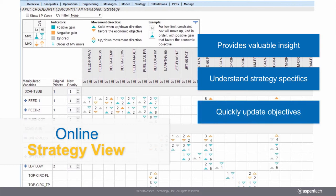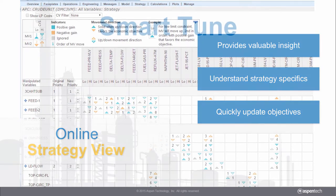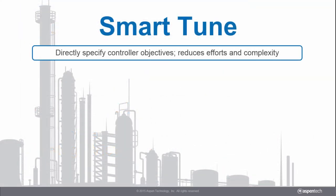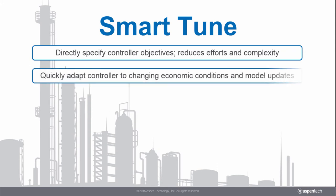When controller objectives change, the strategy can easily be updated from the online interface by simply changing the MV priorities — no tuning required. SmartTune eliminates controller tuning by allowing users to directly specify the controller objectives, greatly reducing efforts and complexity. If controller objectives change or the models are updated, there is no need to revisit tuning.